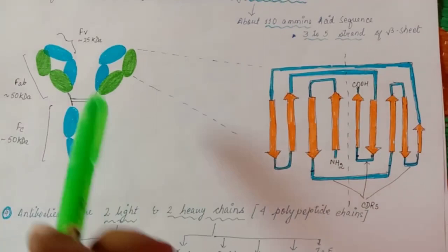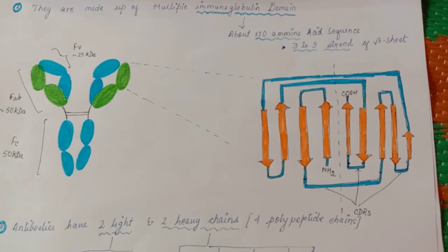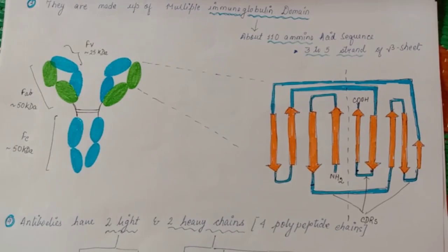Not only variable but a hypervariable region, so that you can make out in our body, B cell or plasma cell can produce antibody against every kind of antigen which is present on the earth. For sure I can say that from Mars also, if any antigen will come, our B cell is capable of making antibody against it.